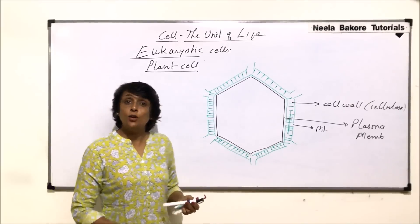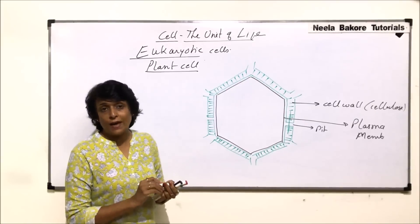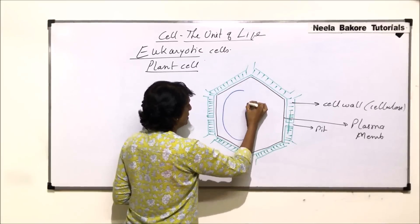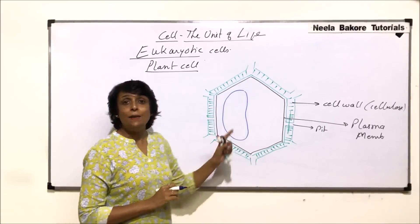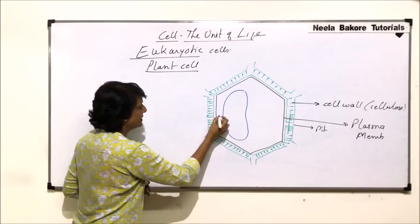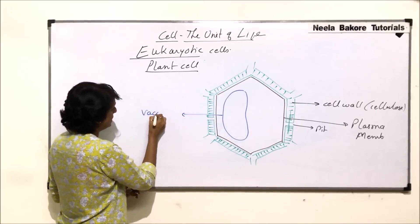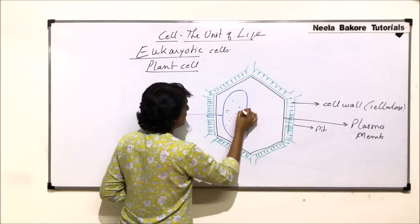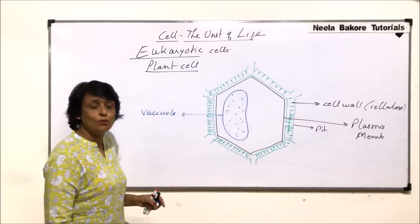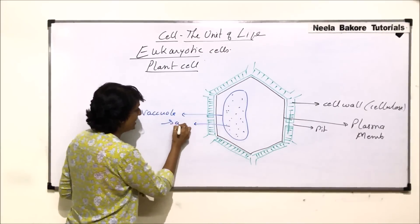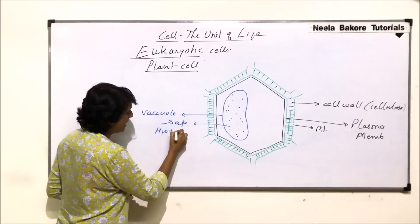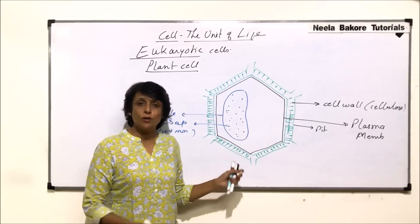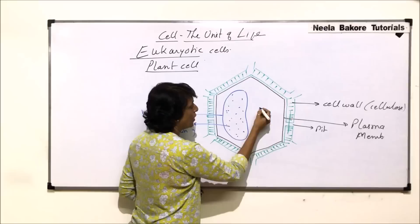In a plant cell, the vacuole is single and large, occupying most of the space. Because of this, the nucleus gets shifted towards one side. Inside the vacuole is a watery substance rich in mineral ions, known as sap — water plus minerals. So this vacuole can also be termed a sap vacuole.